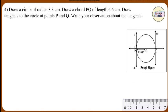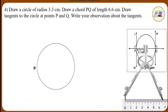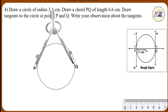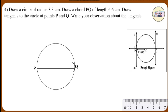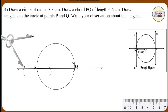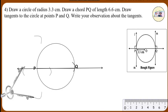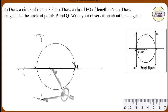Steps of Construction: Draw a circle of radius 3.3 cm. Take any point P on it. Take a measurement of 6.6 cm on the compass and cut an arc on the circle to mark point Q. You will get point Q exactly on the opposite side of P. To construct a tangent at P, draw two arcs on both sides of point P using a convenient measurement. From these two points, draw two arcs on the upper and lower part of line PQ. Draw a line through the intersection points of these arcs. This line L is the tangent at point P.